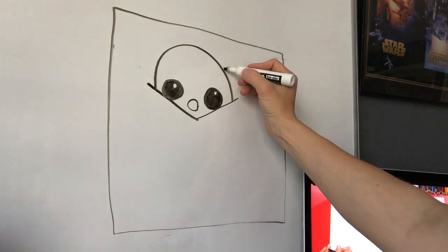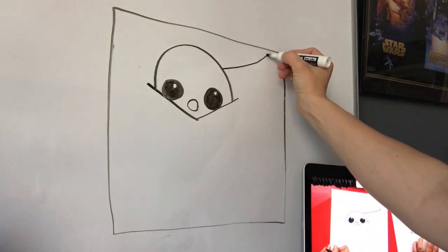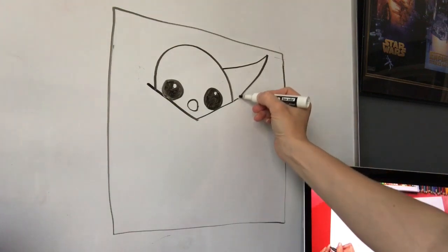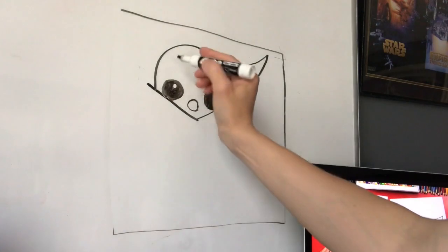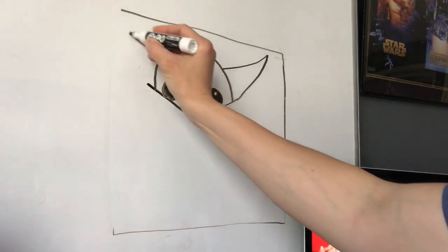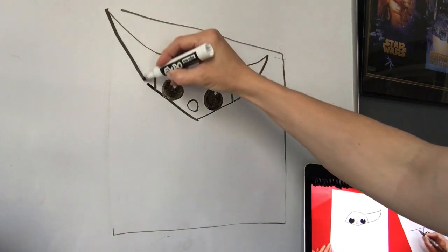Then we're gonna do his ears. So we're gonna come out here next to his head. We're gonna go a line going up and come back down and connect to that V. Do the same on the other side. I'm gonna give myself more room over here so I can make them the same size. And back down.